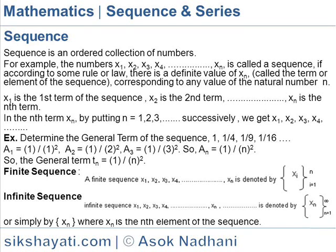Infinite sequence. If the number of elements is unending, the sequence is infinite. Infinite sequence X1, X2, X3, like that, XN up to infinity, is denoted by XN, N is equal to 1 to infinity, or simply by XN, where XN is the Nth term of the sequence.